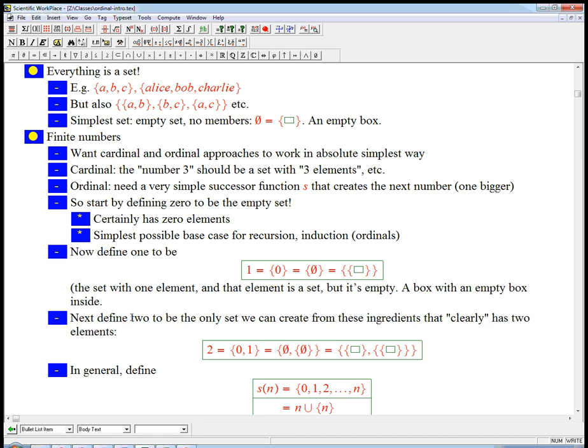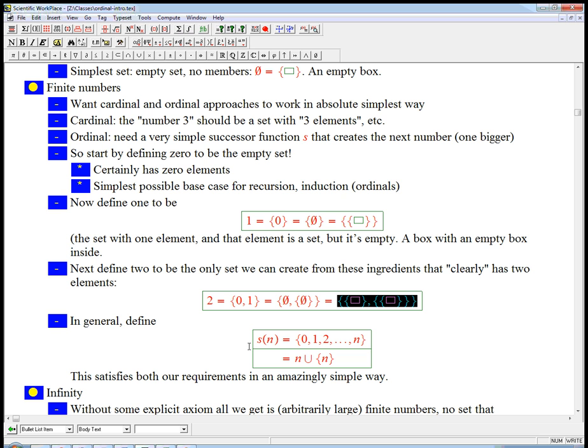What about two? Let's find the only set we can create from these ingredients that seems to have intuitively two elements. So we're just going to put the empty box in it and that box with an empty box inside it, in it. You can see we're sort of starting to nest the boxes here. So it's just the set with zero and one in it, or if we unpack that, it's the set with the empty set and that singleton, which happened to whose element happened to be the empty set inside it. And again, you could just expand it all in terms of a bunch of curly braces. And I guess you need commas too, curly braces and commas, that's all.